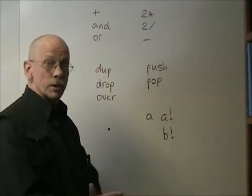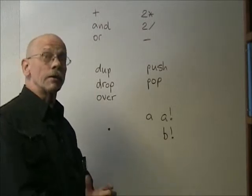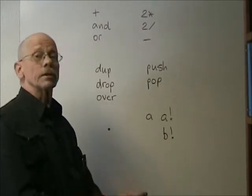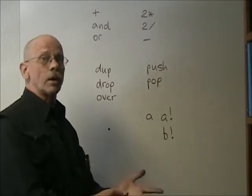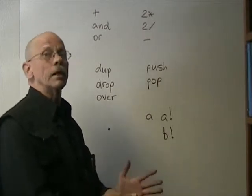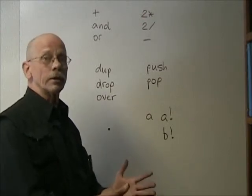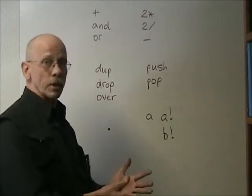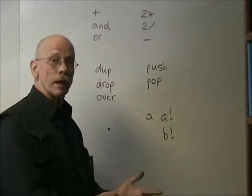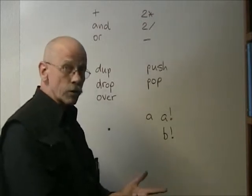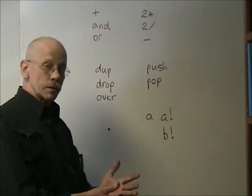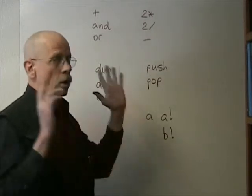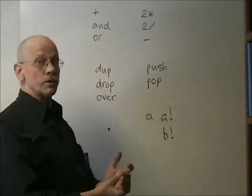One thing that you'll notice as a Forth programmer would be missing there is swap. Swap is absent for good reason. Data paths required to implement swap are terribly complicating, and the cost and time of implementing that operator is very significant and measurable. It would slow everything else down. Again, Chuck was very ruthless in minimizing the instruction set in the F18A. These things which are glaringly absent are glaringly absent for good reason.